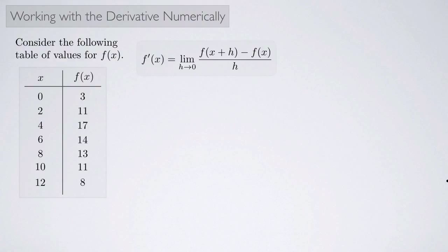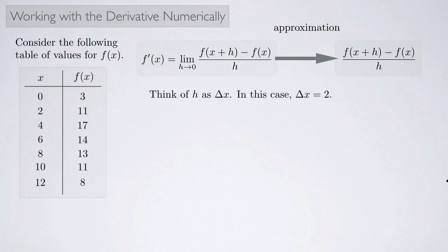How would we actually find those values? We're going to use this definition for the derivative, except instead of allowing the limit as h approaches zero, as an approximation we're just going to look at the fraction part which we call the difference quotient. We're going to think of h as being our Δx here, change in x.